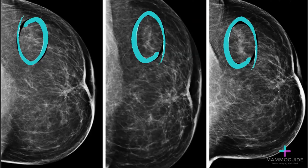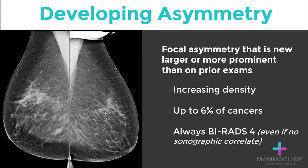Serial craniocaudal mammograms from several consecutive years demonstrate increasing density in the lateral left breast, referred to as a developing asymmetry. Developing asymmetries are essentially focal asymmetries that are new, larger, or more prominent than on prior exams. This increasing density can be seen in up to 6% of breast cancers. This finding should always be given a BI-RADS category 4, even if there is no sonographic correlate.